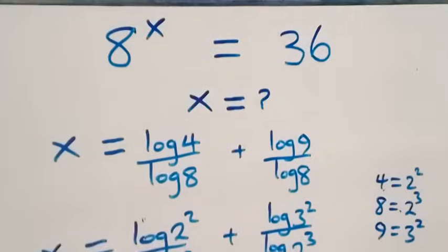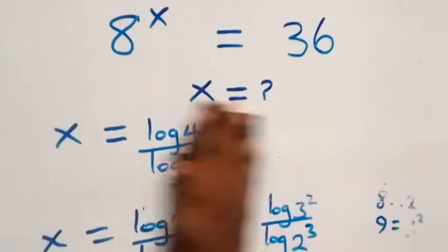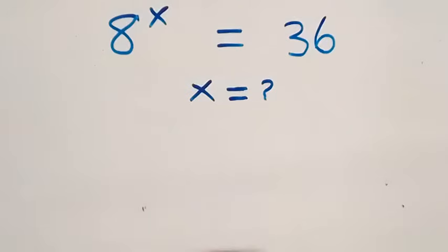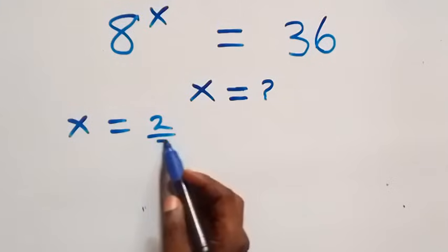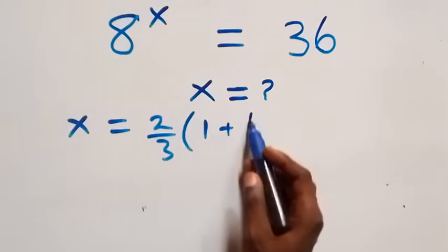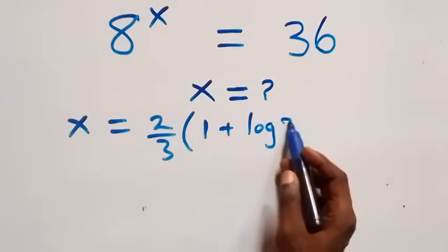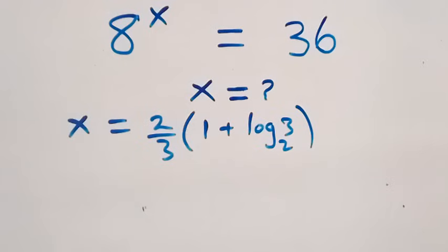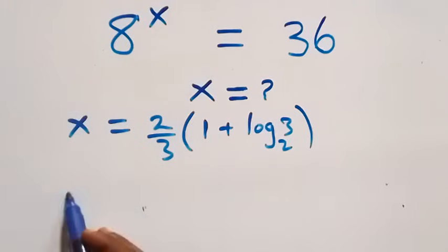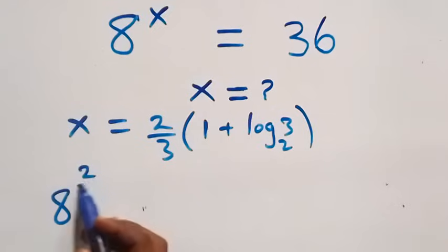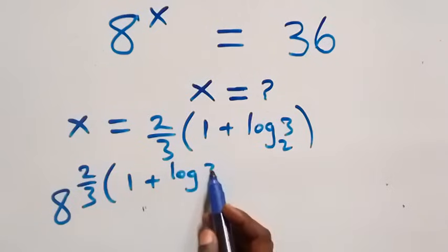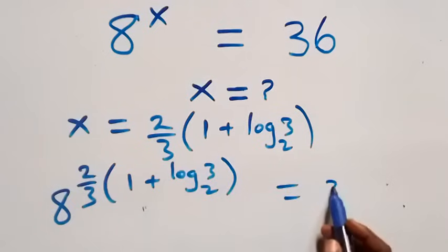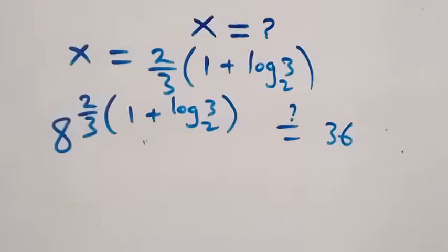We substitute x equals 2 over 3 times (1 plus log 3 base 2) back into the equation. This gives 8 raised to power [2 over 3 times (1 plus log 3 base 2)] equals 36.